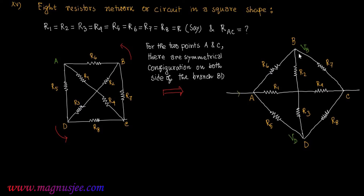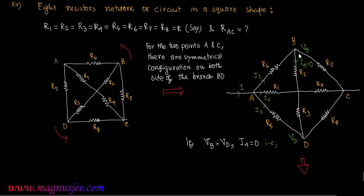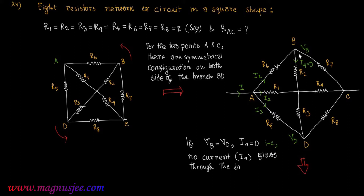We assume the potential at points B and D are V_b and V_d. The main current I is split into three currents I1, I2, and I3, and the current flowing through branch BD is I4. If V_b equals V_d, that is the potentials at B and D are the same, then I4 equals zero — no current flows through branch BD.